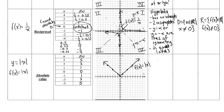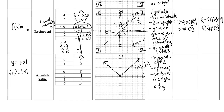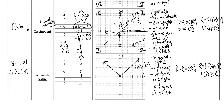Last but not least, the absolute value function exists in quadrants 1 and 2. It opens up — it's not a parabola but has similar properties. The vertex is at the origin. The x and y intercepts are both at the origin. The domain has no restriction: x is a set of all real numbers. But the range, just like our parabola, has a restriction: f of x is a set of all real numbers such that f of x is greater than or equal to 0. It comes down to 0 but never goes below that on the parent function.